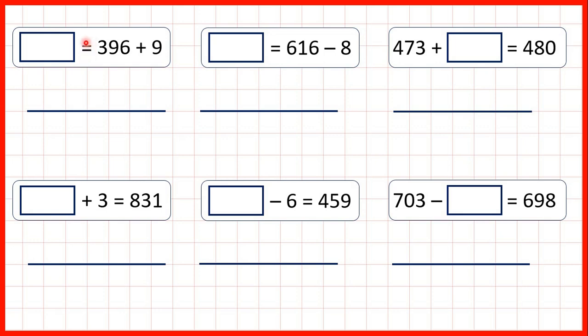It doesn't matter whether the equal sign comes at the start of a calculation like it does here, or at the end of a calculation like it usually does, we do the same thing. We just need to work out 396 plus 9. Using a number line from 396, we can add 4 to get to 400.